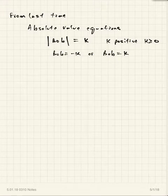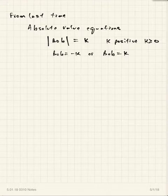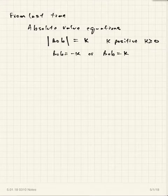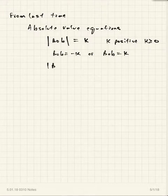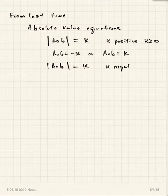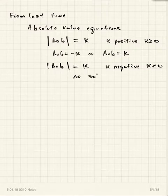If the absolute value of something equals a constant K and K is negative — less than zero — then there is no solution to that type of equation.